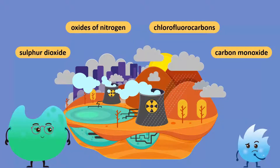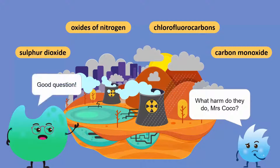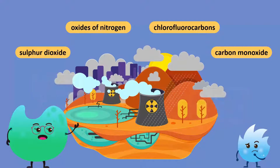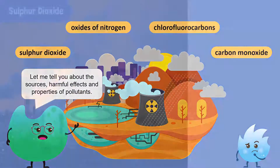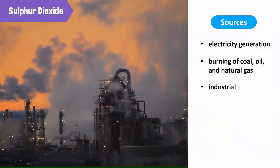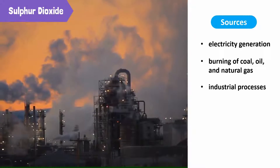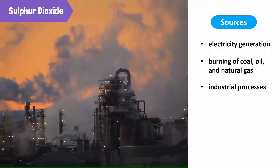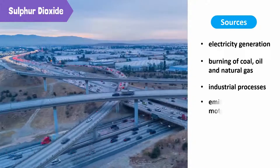Where do these pollutants come from? What harm do they do, Mrs. Coco? Good question. Let me tell you about the sources, harmful effects, and properties of these pollutants. The main sources of sulfur dioxide are electricity generation, burning of coal, oil, and natural gas, industrial processes, and emissions from motor vehicles.